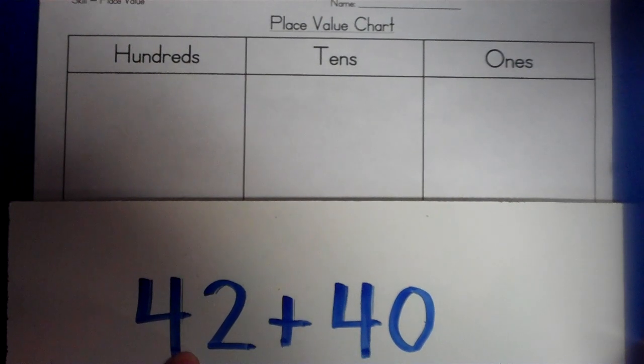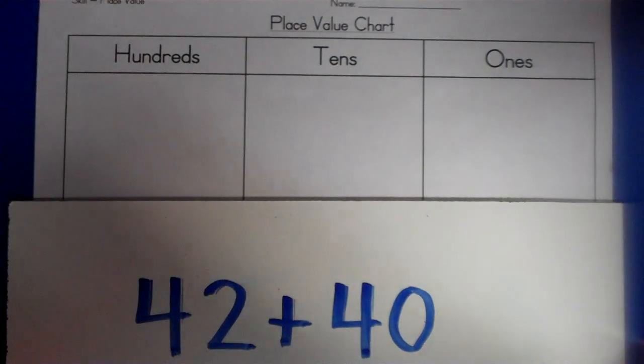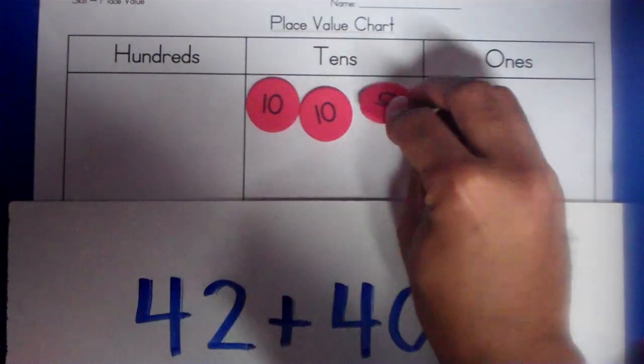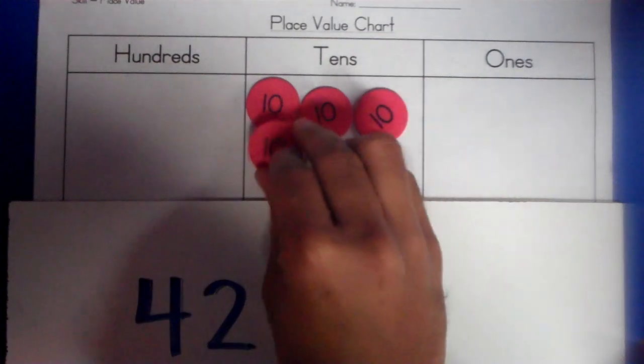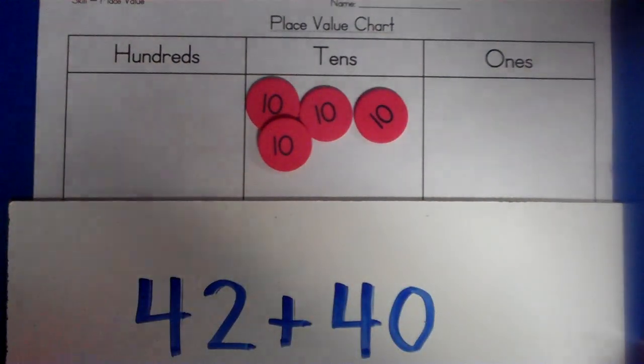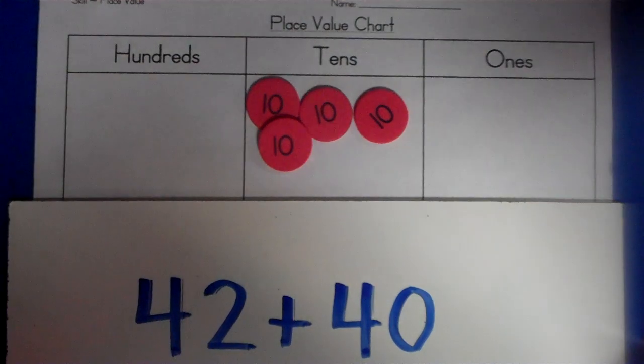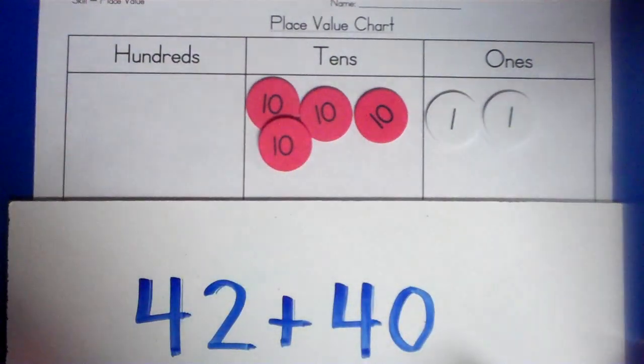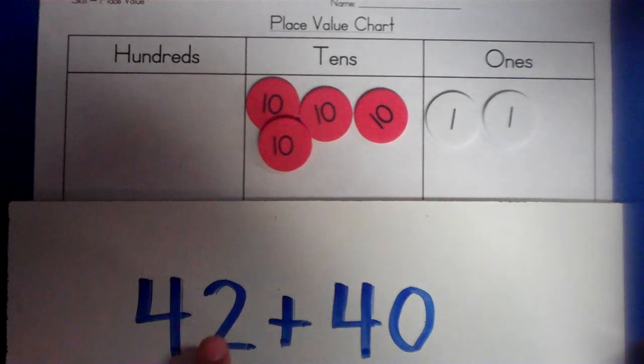So I'm going to put down 4 tens, and I'm going to put down 2 ones because the 2 is in the ones place. So now I have 4 tens and 2 ones, and that's where I'm getting my 42 from.